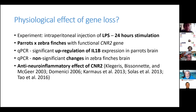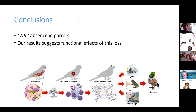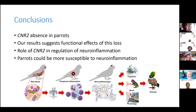This supports the anti-neuroinflammatory effect of the CNR2 receptor. In conclusion, we confirm the absence of the CNR2 gene in parrots, and our results suggest that this loss may have some functional effects connected with the role of CNR2 in the regulation of neuroinflammation. Thanks to this, parrots could be more susceptible to neuroinflammation than other species, which may also result in some behavioral disorders in these animals.